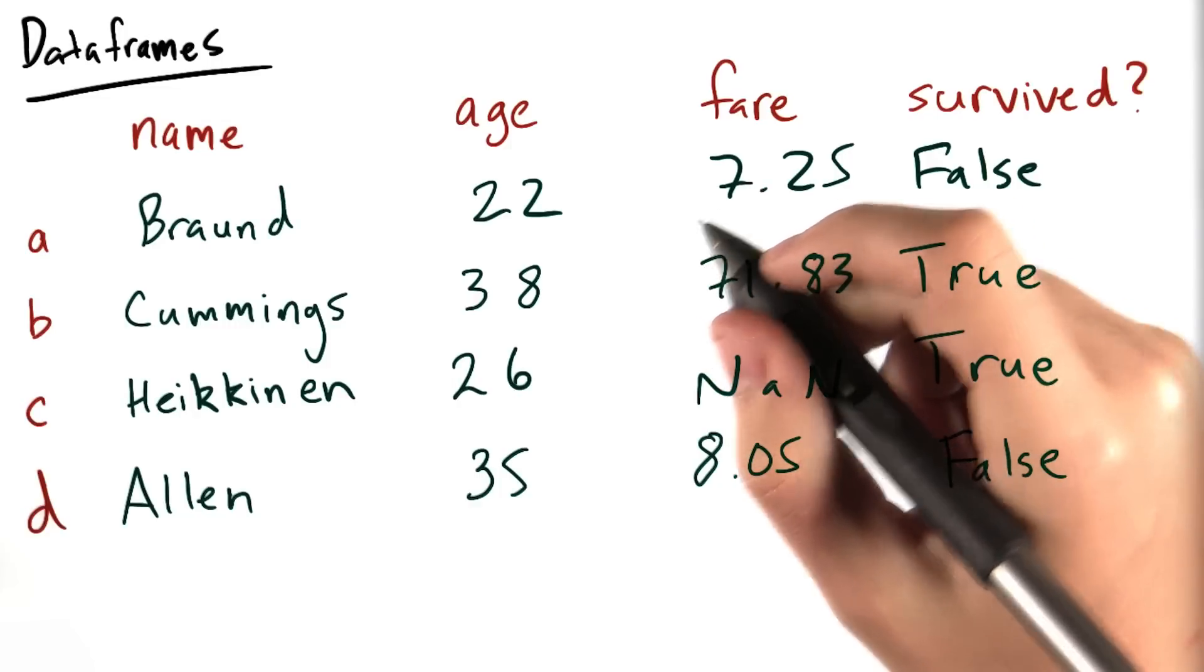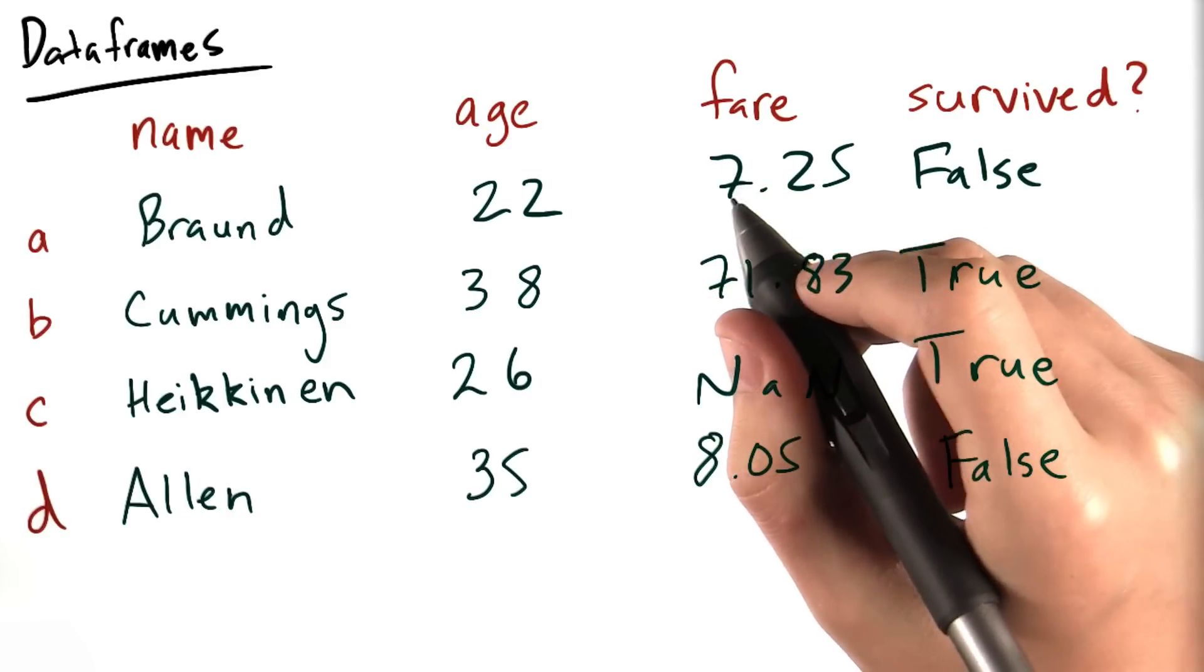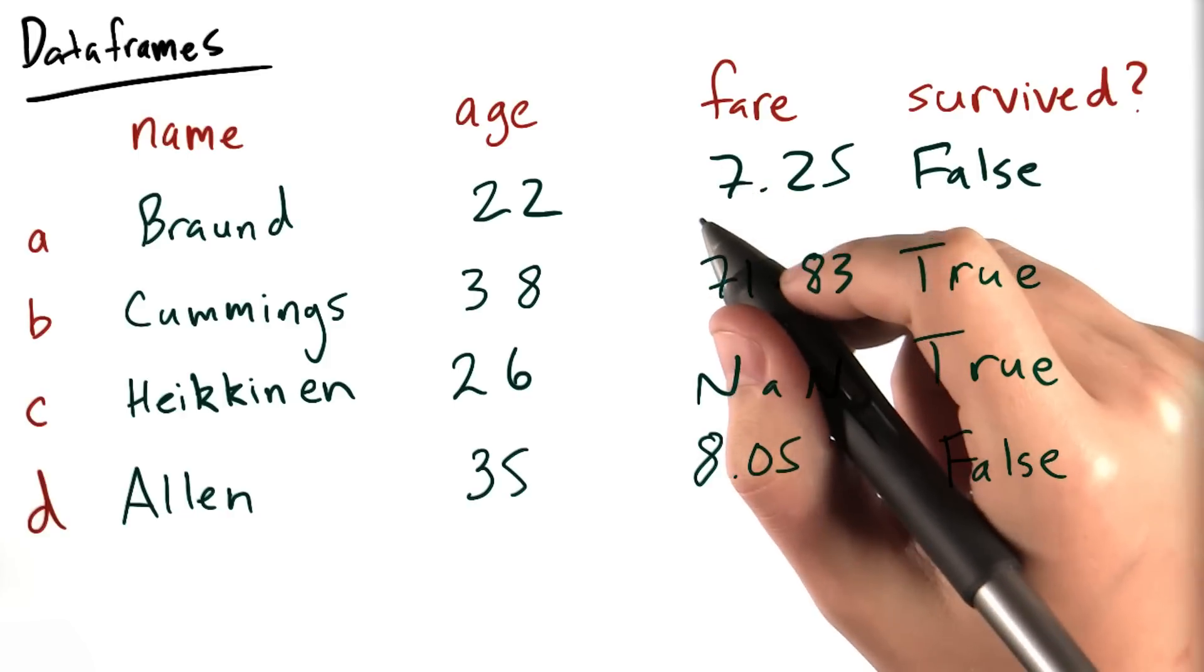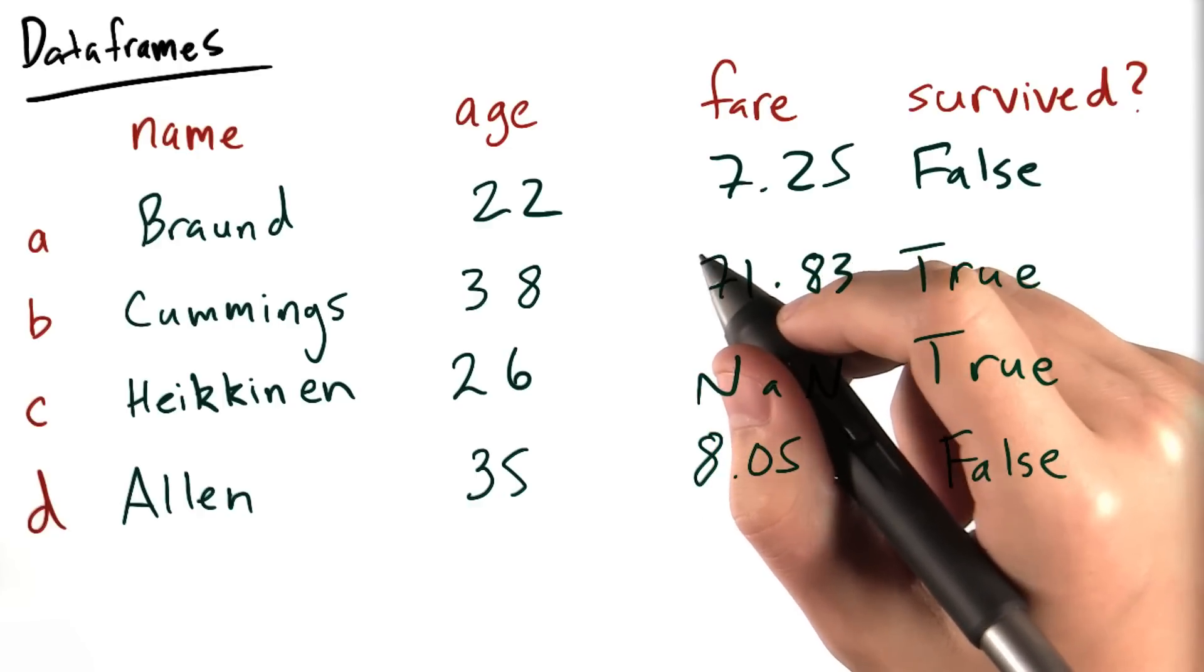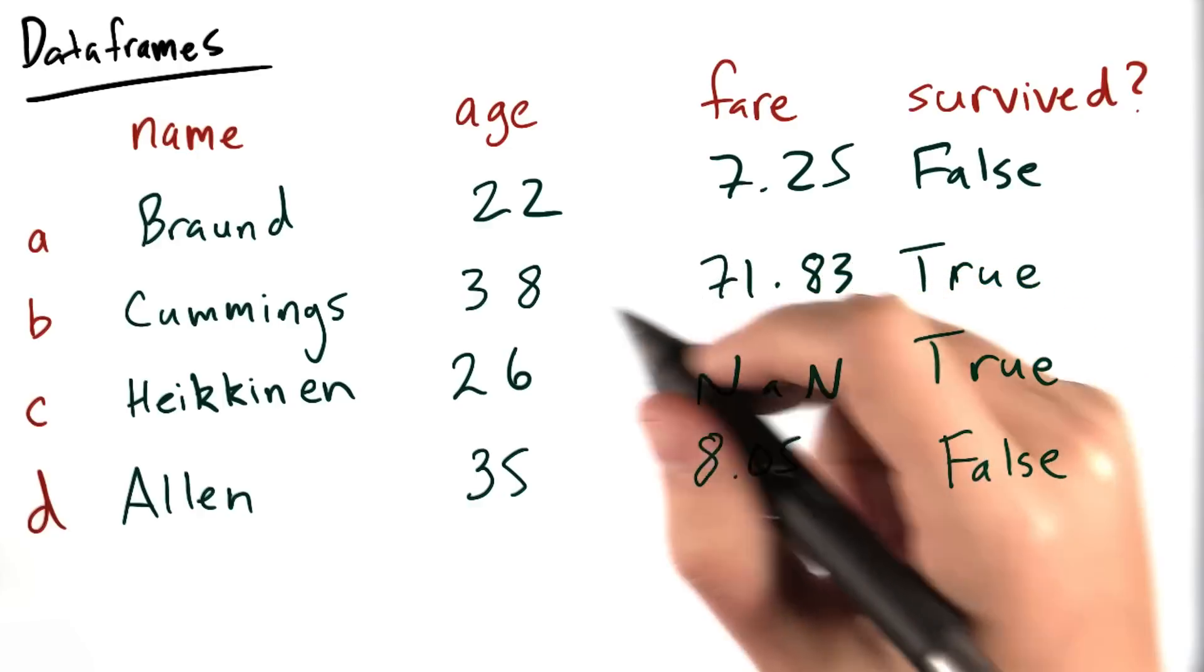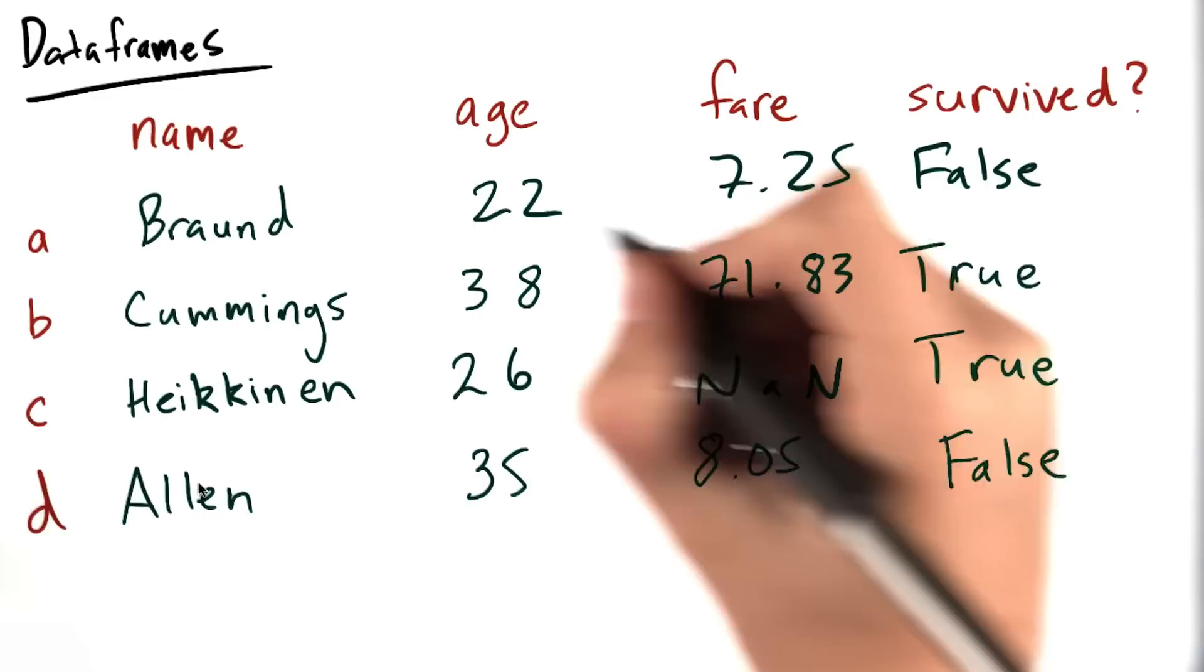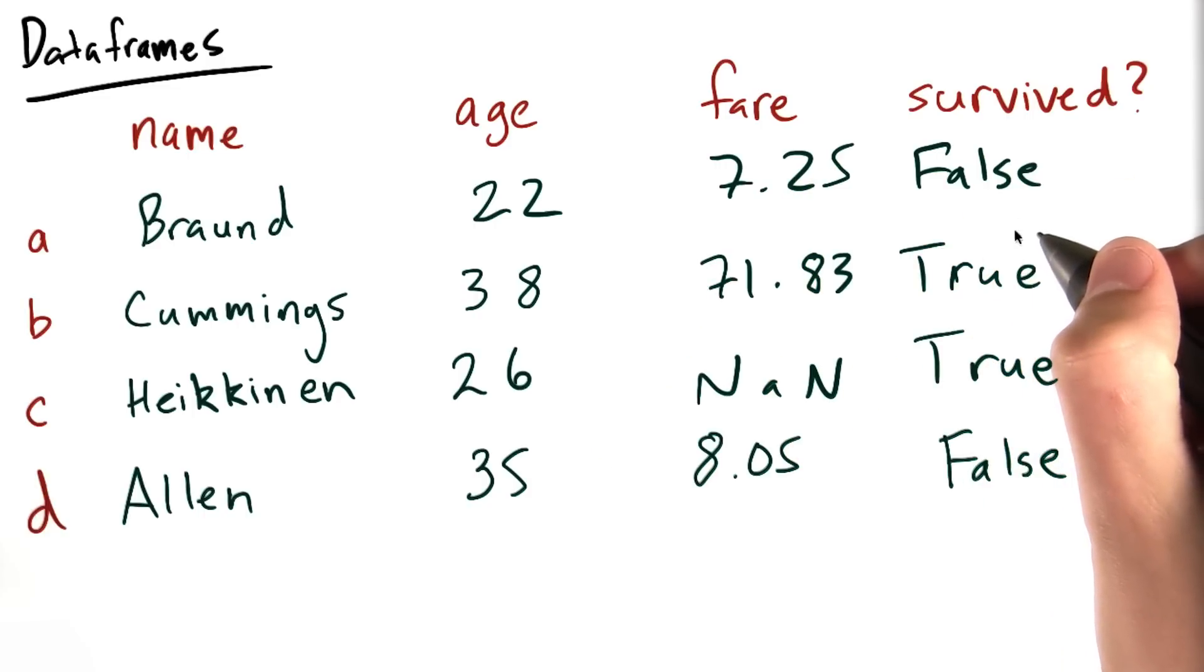Now that we know a little bit about manipulating data, why don't we talk about how we'll store and reference it using pandas. Data in pandas is often contained in a structure called a data frame. A data frame is a two-dimensional labeled data structure, with columns which can be different types if necessary.